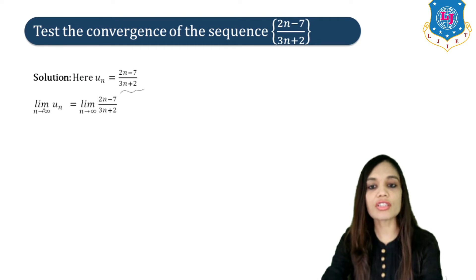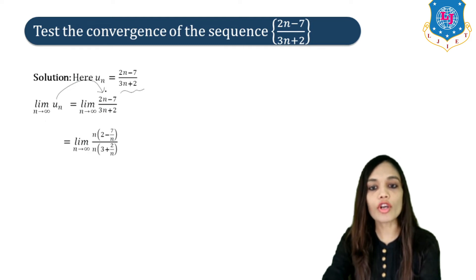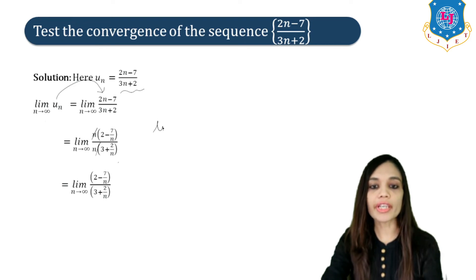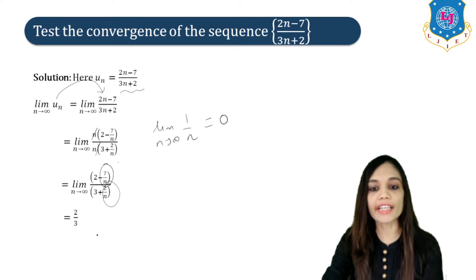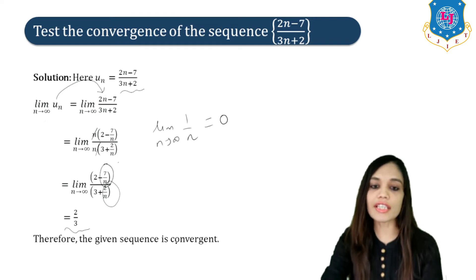To check convergence, we find lim(N→∞) UN = lim(N→∞) (2N−7)/(3N+2). Taking N common from numerator and denominator: lim(N→∞) (2 − 7/N)/(3 + 2/N). Since lim(1/N) = 0, both 7/N and 2/N go to 0, giving the answer 2/3, which is finite. Therefore the given sequence is convergent.